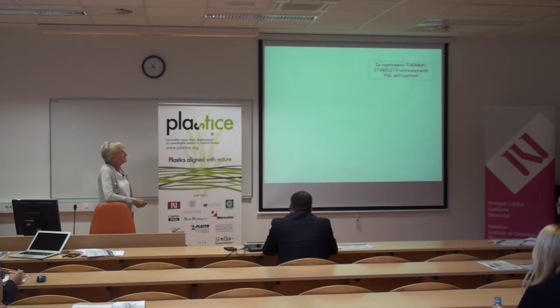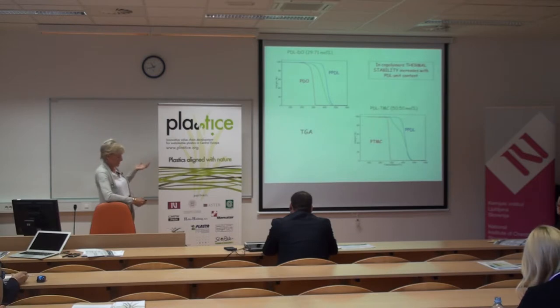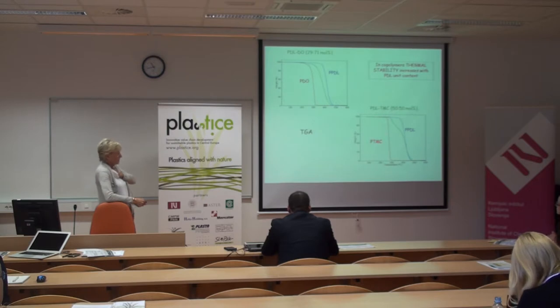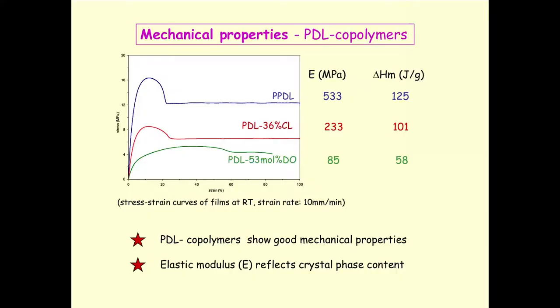Regarding properties: thermal stability increases with increasing PDL content. Polydioxanone alone is not very thermally stable, but copolymers with PDL show increased stability — the same applies to polytrimethylene carbonate copolymers. For mechanical properties, the homopolymer and various copolymers show good, acceptable properties. The elastic modulus — corresponding to the slope of the initial part of the stress-strain curve — changes and can be tuned.